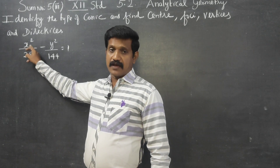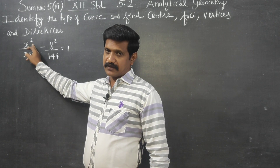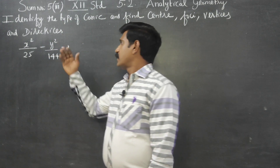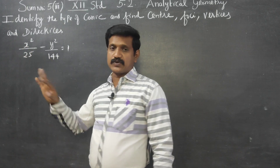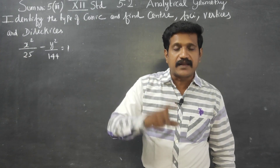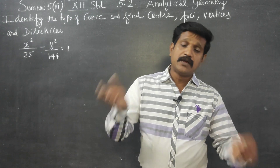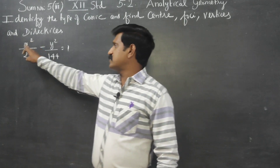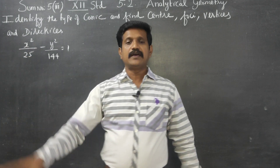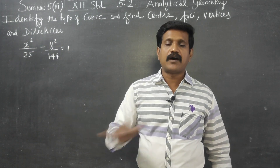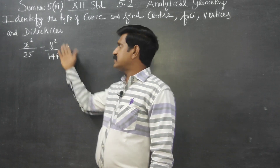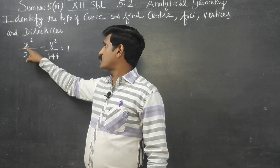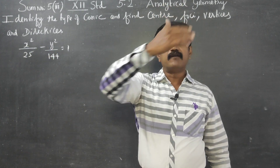When x comes first, it is a horizontal hyperbola. You can see a² and b², and the positive x² term means the transverse axis lies along the x-axis or parallel to the x-axis.